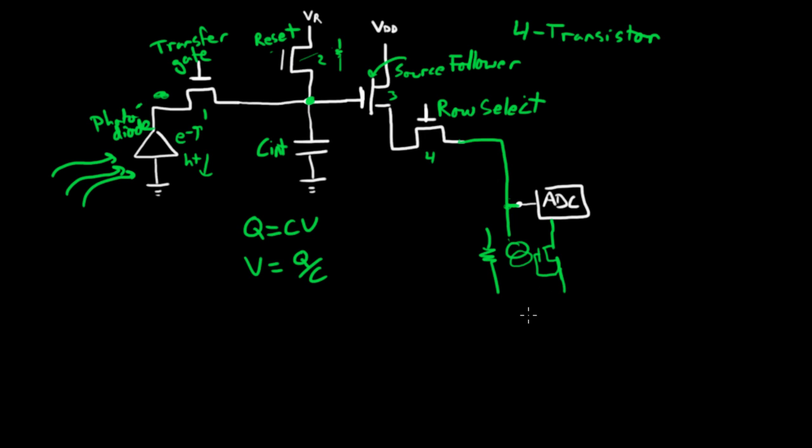And you're going to make two samples. You'll make sample one, which you do just after you reset it. So you reset this node, turn that transistor off, this transistor is off, and then you read out what this voltage is, and I'm going to call it Vr prime.